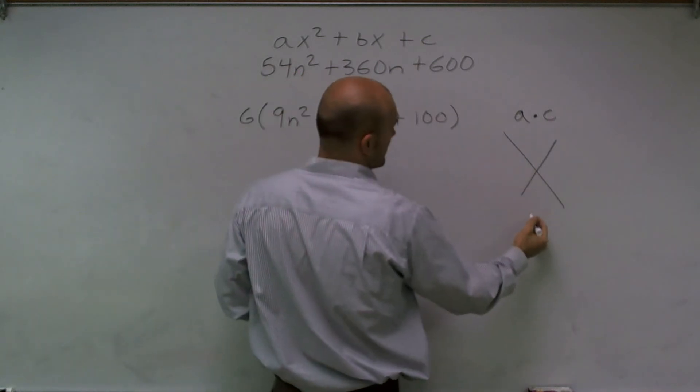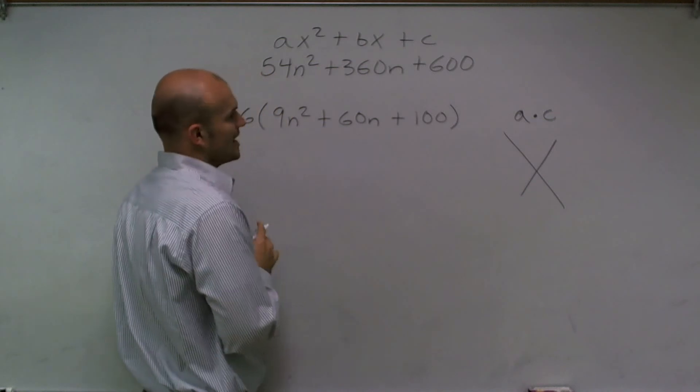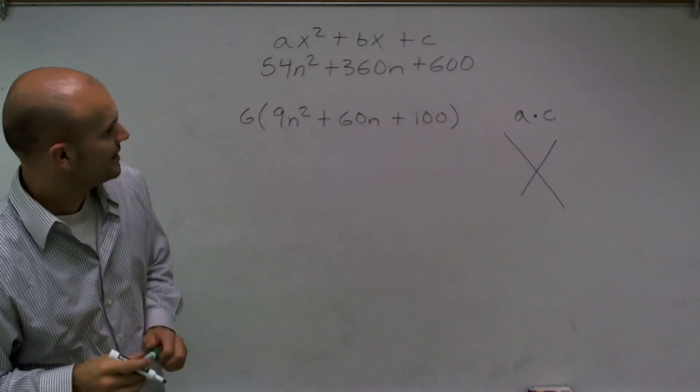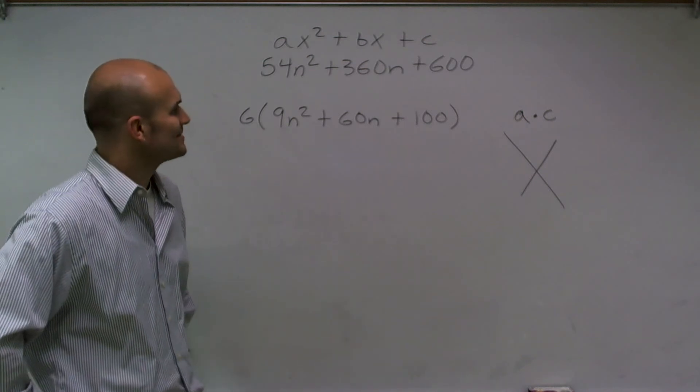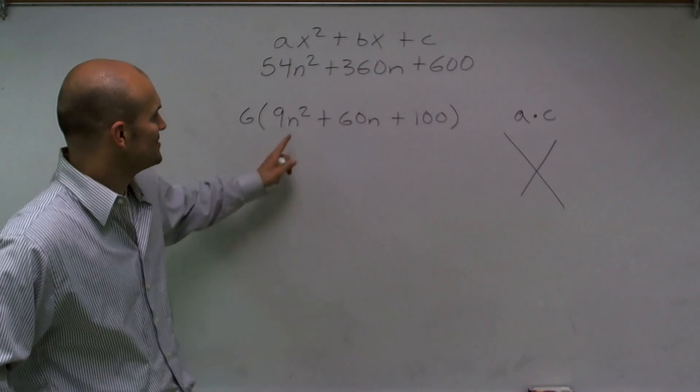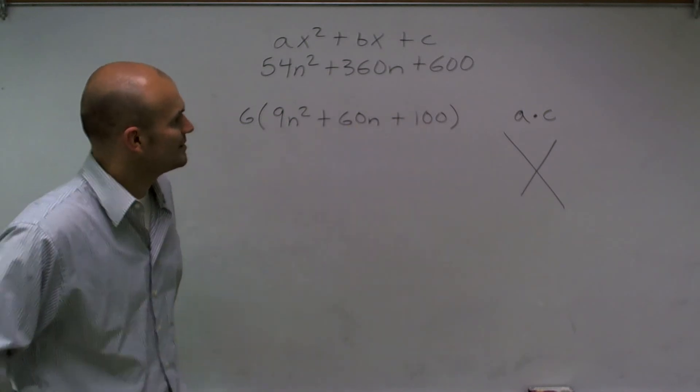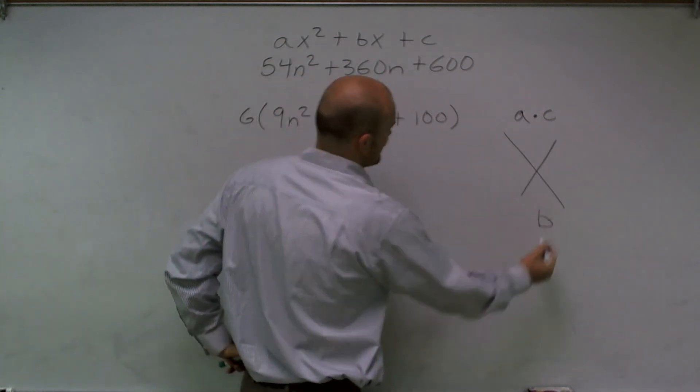And then to find my middle term, I'm going to add—hold on, I'm trying to think here. What two numbers multiply to give you a times c, I will then add up to give you b. So then it's going to be a times c and then b will be my middle term.